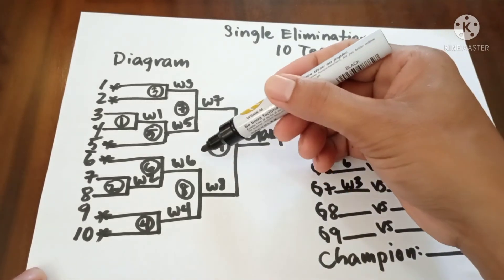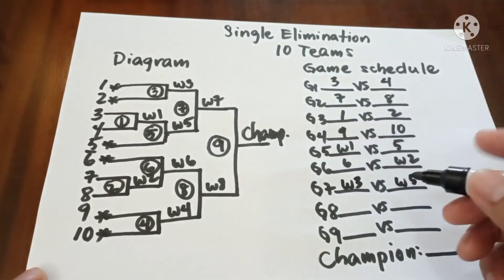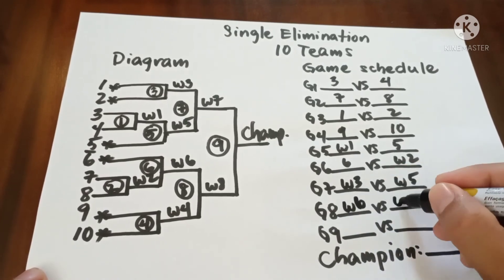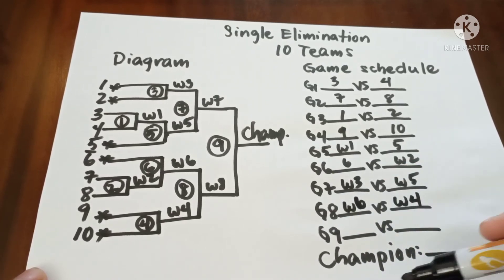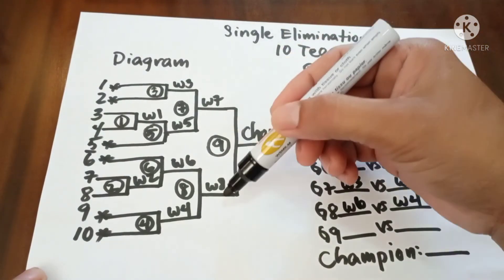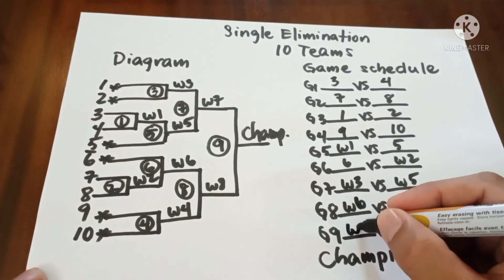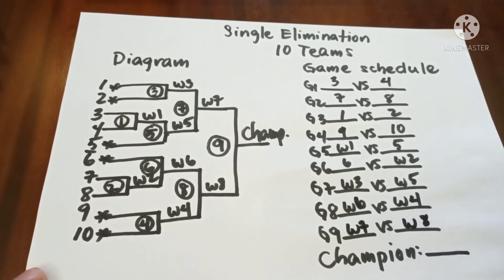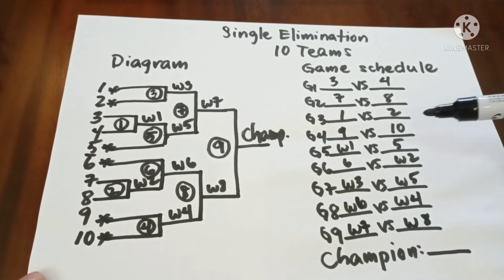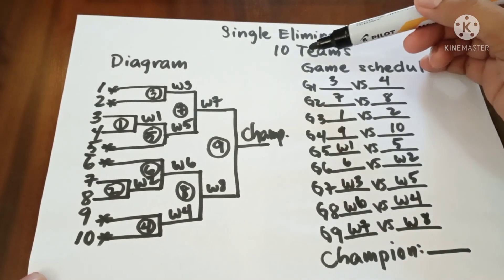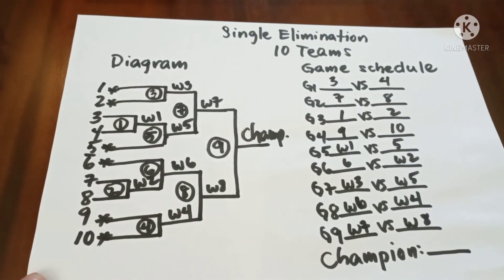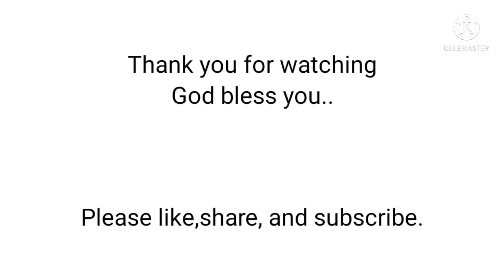In game 8, we have winner 6 versus winner 4. In game 9, we have winner 7 versus winner 8. This is the diagram and game schedule for 10 teams or 10 number of entries. We'll be right back.